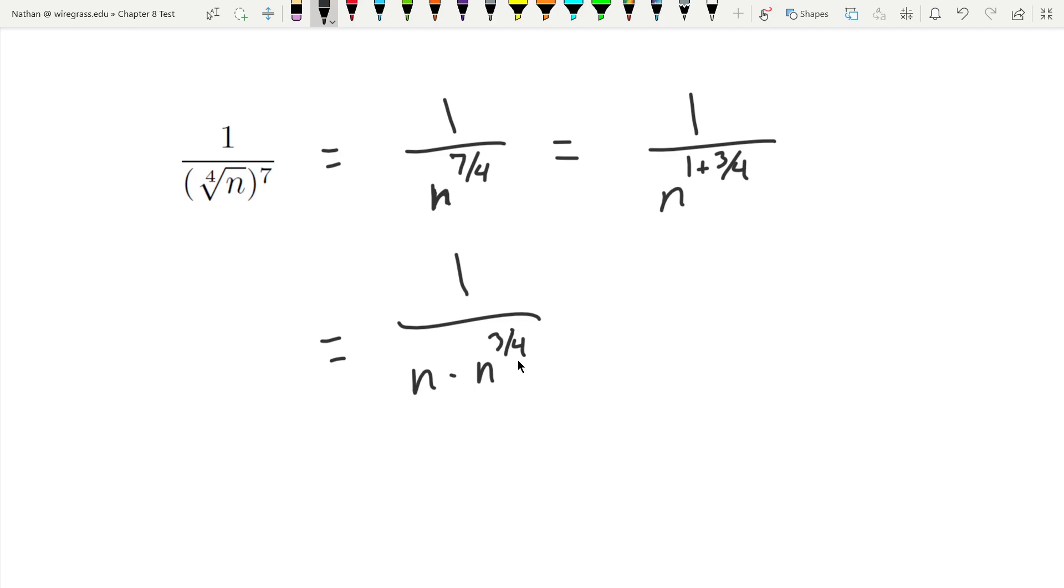And the way I can get rid of this in the denominator, because I don't want to have a radical in the denominator, is I'm going to multiply by something to where this power will end up reducing. I'm going to multiply by 1 fourth. If I multiply by 1 fourth, I have to do 3 fourths plus 1 fourth. That's going to be 4 fourths, or just 1. So the radical cancels in the denominator when I do this.